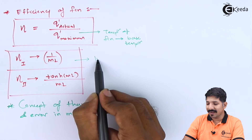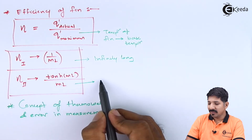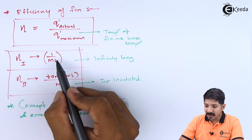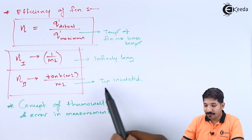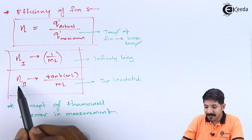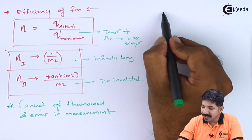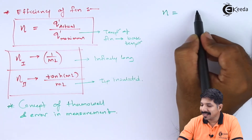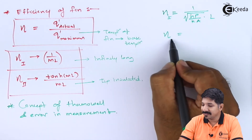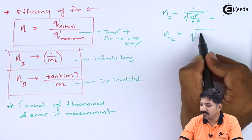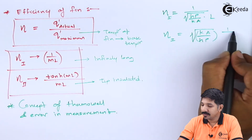For the infinitely long fin, the efficiency is 1/(mL). For the insulated tip fin, the efficiency is tanh(mL)/(mL). Substituting the value of m, we can write this in terms of H, P, K, A, and L — the efficiency for the first case becomes √(Ka/(HP)) · (1/L).